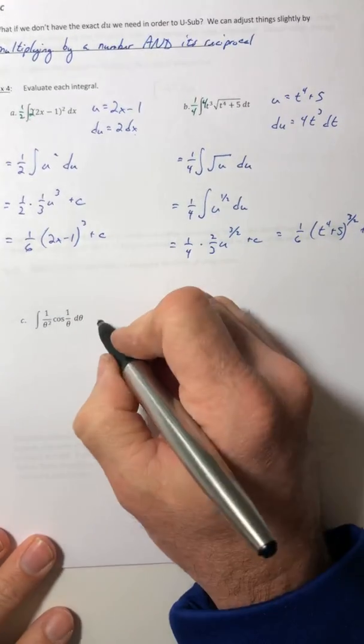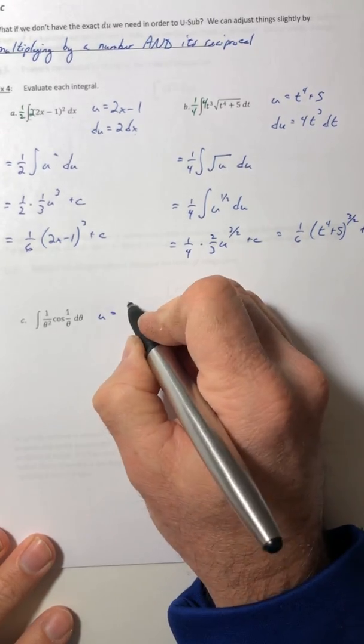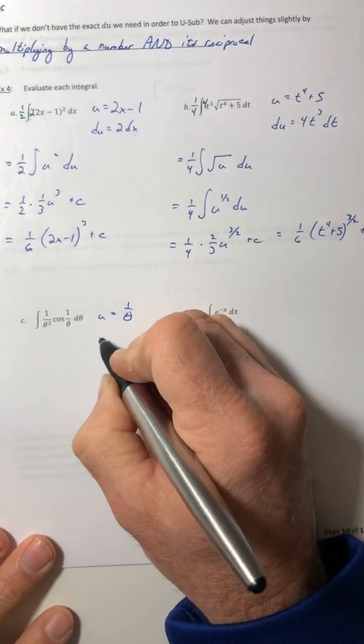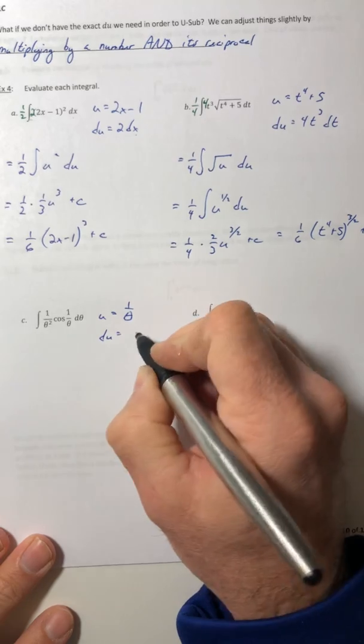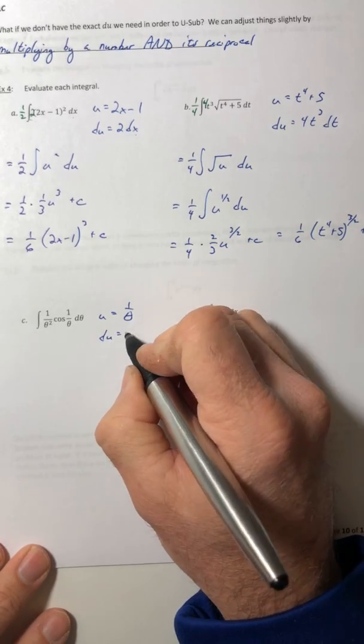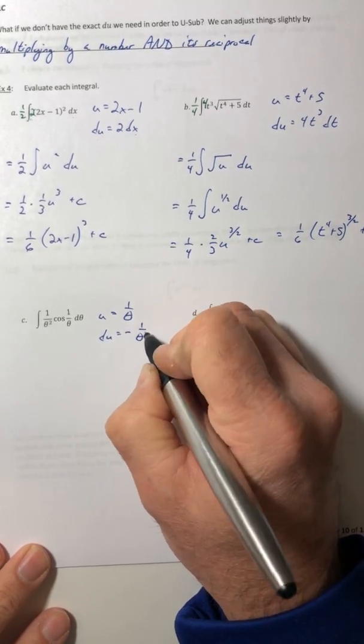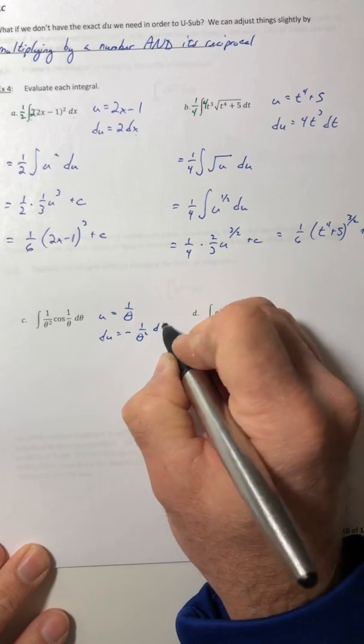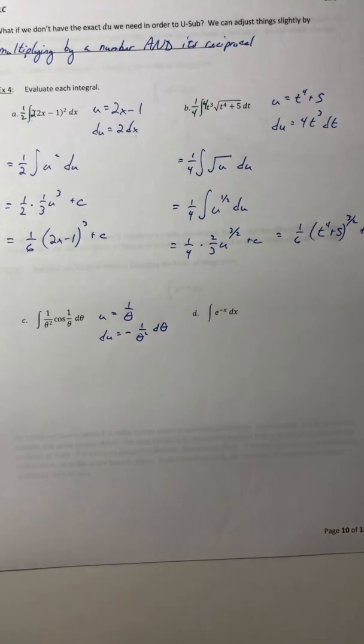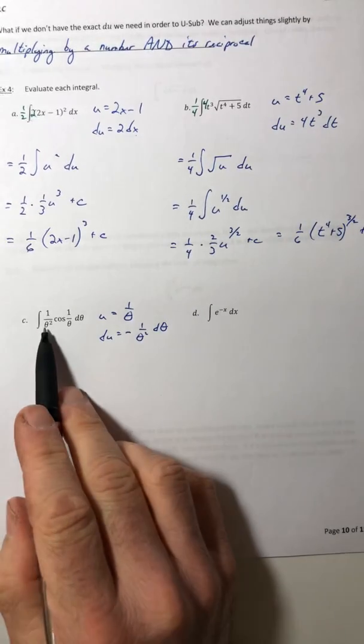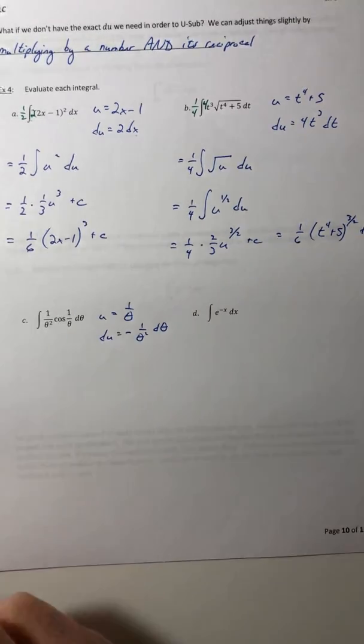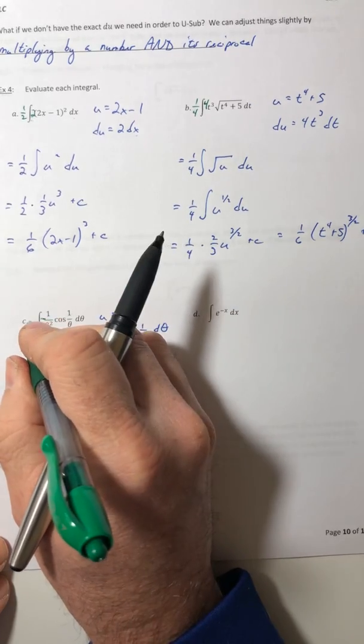Okay, part c. Let u equal the angle, so one over theta, which means that my du, if I do the derivative of this, that'll be negative one over theta squared d theta. So I have the one over theta squared but I need it to be a negative.